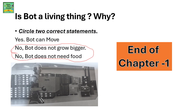Is the bot — meaning a robot — a living thing? Why? Circle the two correct statements from the three given. Yes, a bot can move. No, a bot cannot grow bigger. No, a bot does not need food. The last two statements are correct.